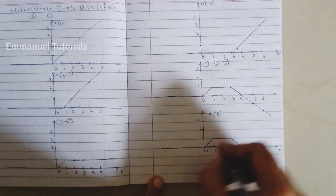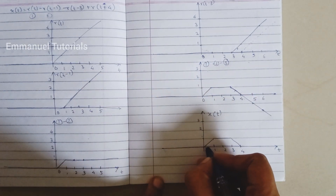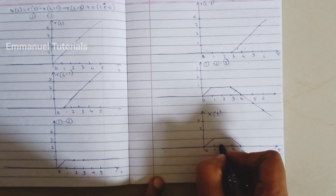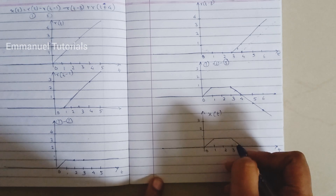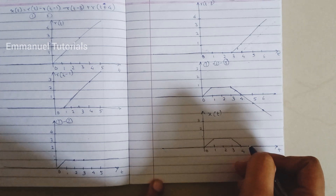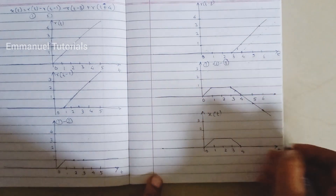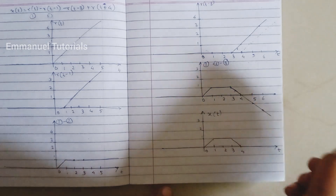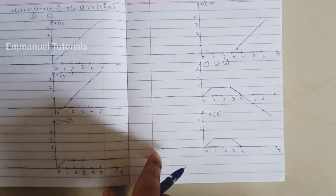The final resultant signal x(t) exists from t=0 to t=4. It rises as a ramp from 0 to 1 between t=0 and t=1, stays constant at 1 (DC) from t=1 to t=3, then decreases from 1 to 0 between t=3 and t=4. Hope you understood this.